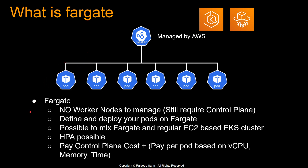Some key points: there are no worker nodes to manage. Even though it still has a control plane managed by AWS, you don't have the overhead of managing EC2s — you just define and deploy your pods on Fargate. It is still possible to mix Fargate and regular EC2-based EKS clusters, and horizontal pod autoscaling is supported.